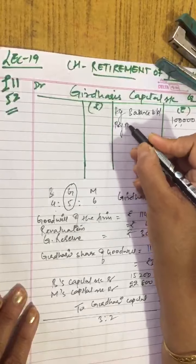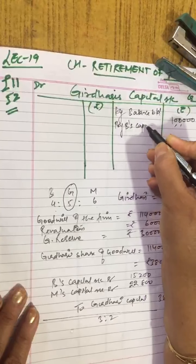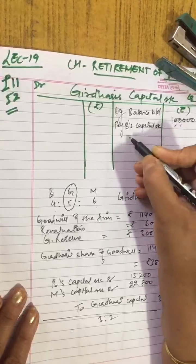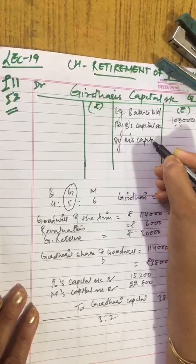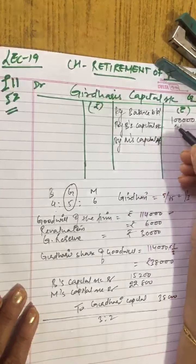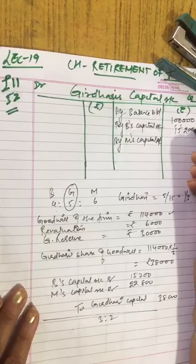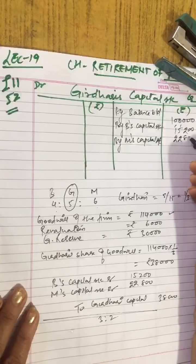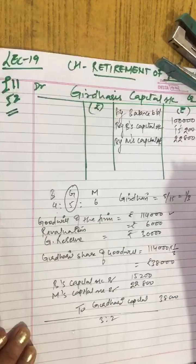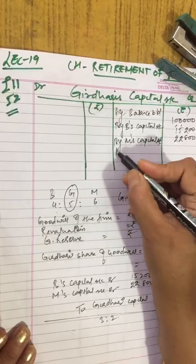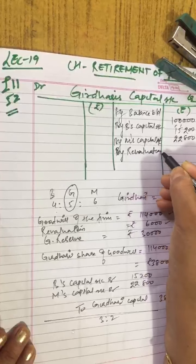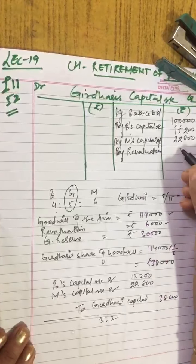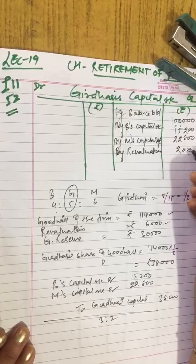4:6 means 2:3. So if you calculate, 38,000 into 2 by 5 is 15,200 and 38,000 into 3 by 5 is 22,800. You can post it here. Banwari's capital account debit and Murari's capital account debit. Now revaluation profit: his share from revaluation is 6,000 which is 1 by 3, which is 2,000.